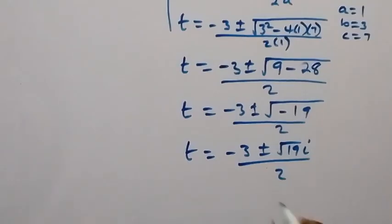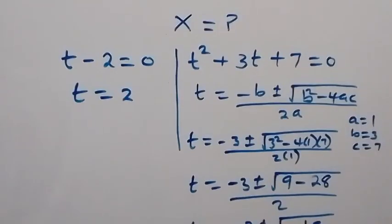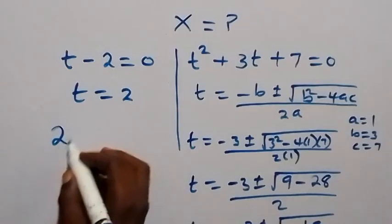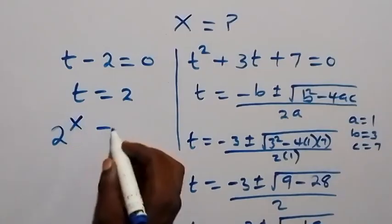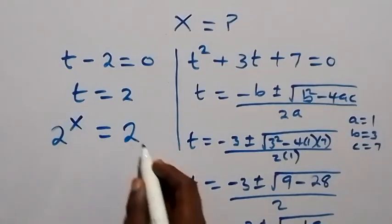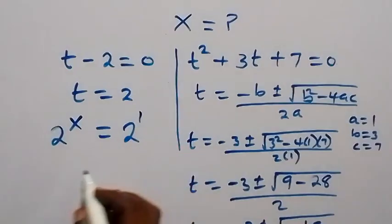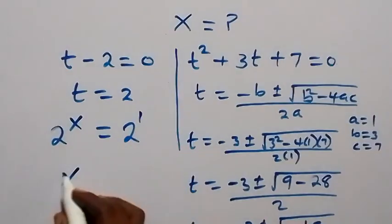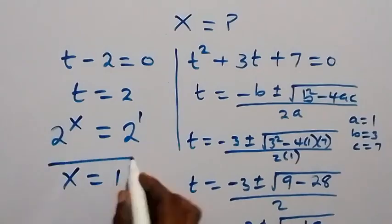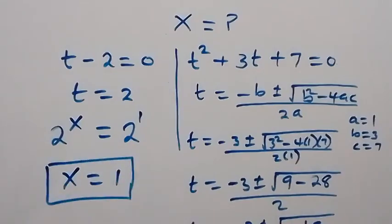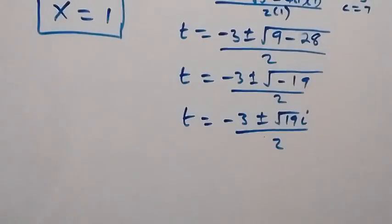Now, recall that we represented t as 2 raised to power x. From the real root, we have 2 raised to power x equals 2, which can be written as 2 raised to power 1. Since the bases are equal, x equals 1.